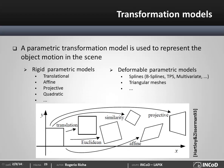Naturally, if the target object moves in more complex ways, we need to use more complex transformation models with additional degrees of freedom. For instance, if we're tracking a book cover, we must use a projective model, which has eight degrees of freedom. And if the target object is not rigid — if it's deformable — then we need to use a deformable model. We could use, for instance, a B-spline or a thin-plate spline to correctly describe the object's deformation.